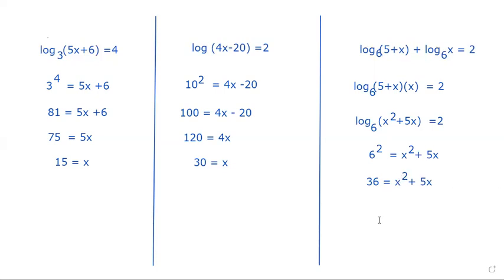Now, if you remember, we have to subtract 36 on both sides of the equation. That's going to give us 0 is equal to x squared plus 5x minus 36. So that turns into a problem that we need to factor.